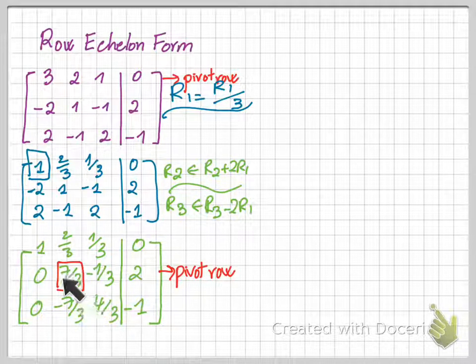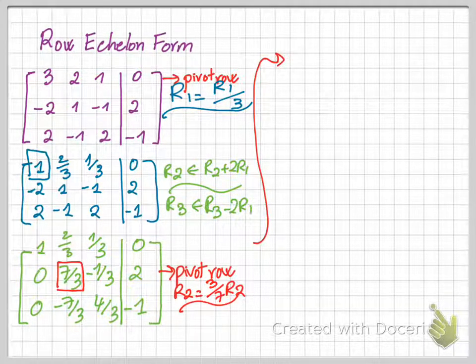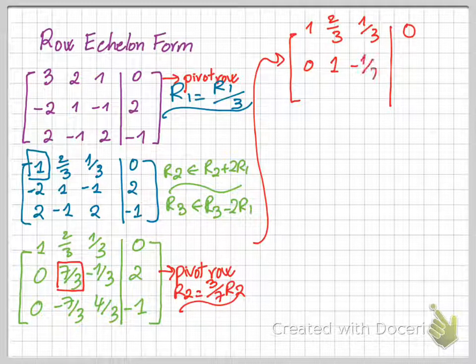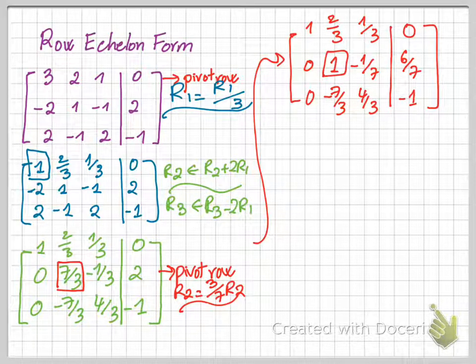And then again, you want to make sure that the leading coefficient of the pivot row is 1. In this case, you're gonna transform row 2 by multiplying 3 over 7 to row 2. By doing that operation, the second row becomes the pivot row with the leading coefficient as 1.